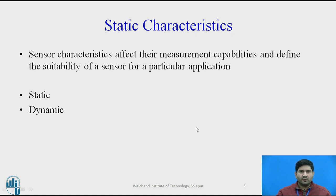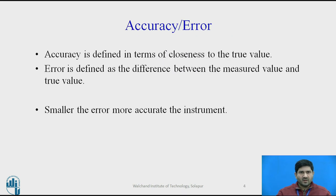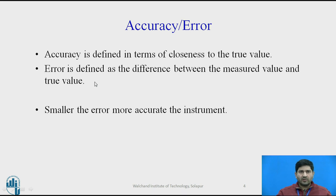Let us review these characteristics which we have already studied as part of the measurements and systems course. First is accuracy. I have written accuracy and error together because they are complementary terms. Accuracy is defined in terms of closeness to the true value, and error is defined as the difference between the measured value and the true value. A smaller error means the instrument is more accurate, which is why we tend to speak of accuracy and error alongside one another.